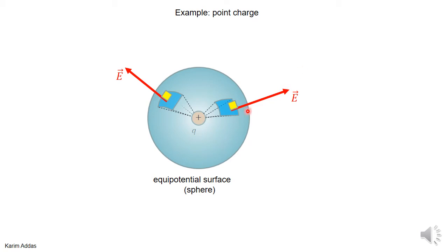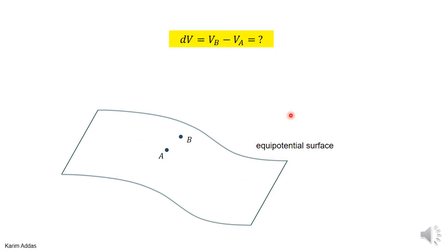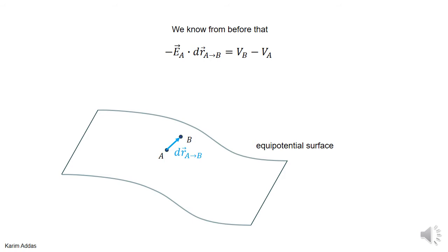Can we make a general argument that the electric field is always perpendicular to the equipotential surface? We take an arbitrary equipotential surface where points a and b are two very close points on this surface. By definition, the potential at a is exactly the same as the potential at b. We define an infinitesimal vector dr pointing from a to b. We know that the difference in potential between two points equals minus the electric field dotted into dr.